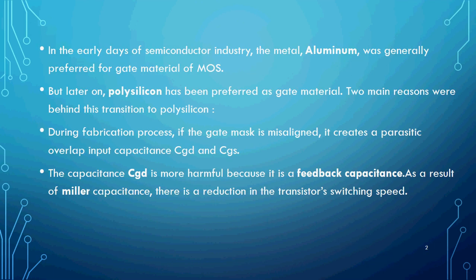In the earlier days of the semiconductor industry, the metal used for a gate contact was usually aluminium. After some time, after some updates, they started using polysilicon and gave preference to polysilicon as a gate material.